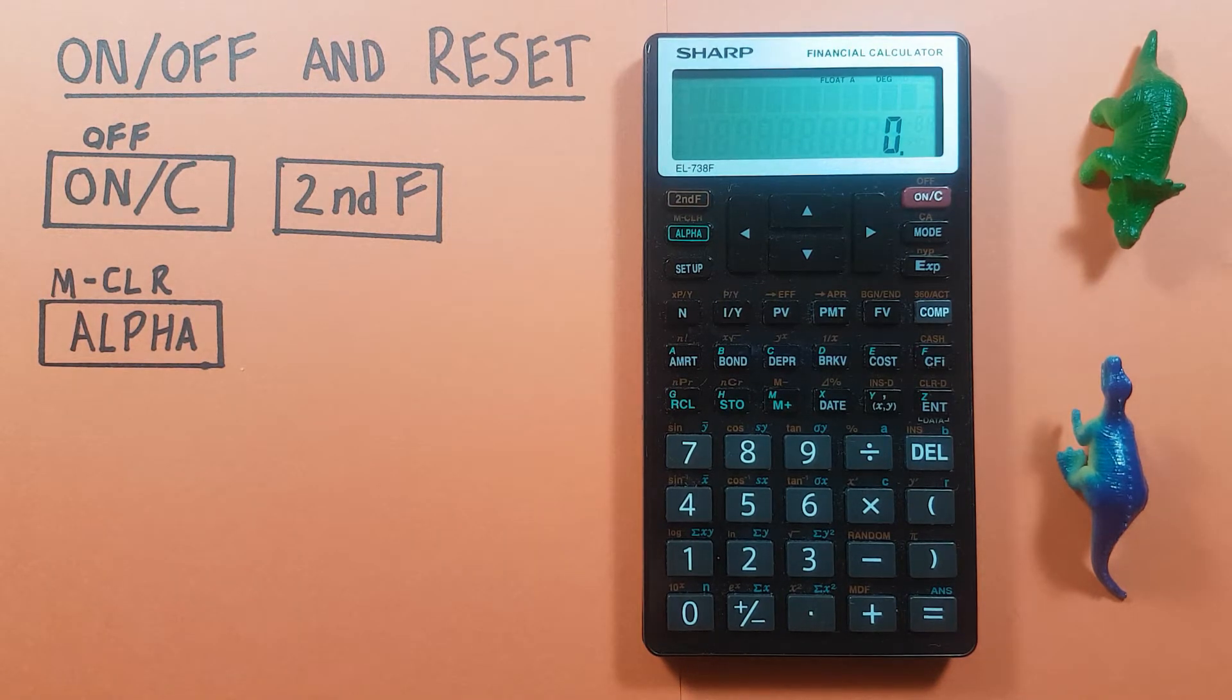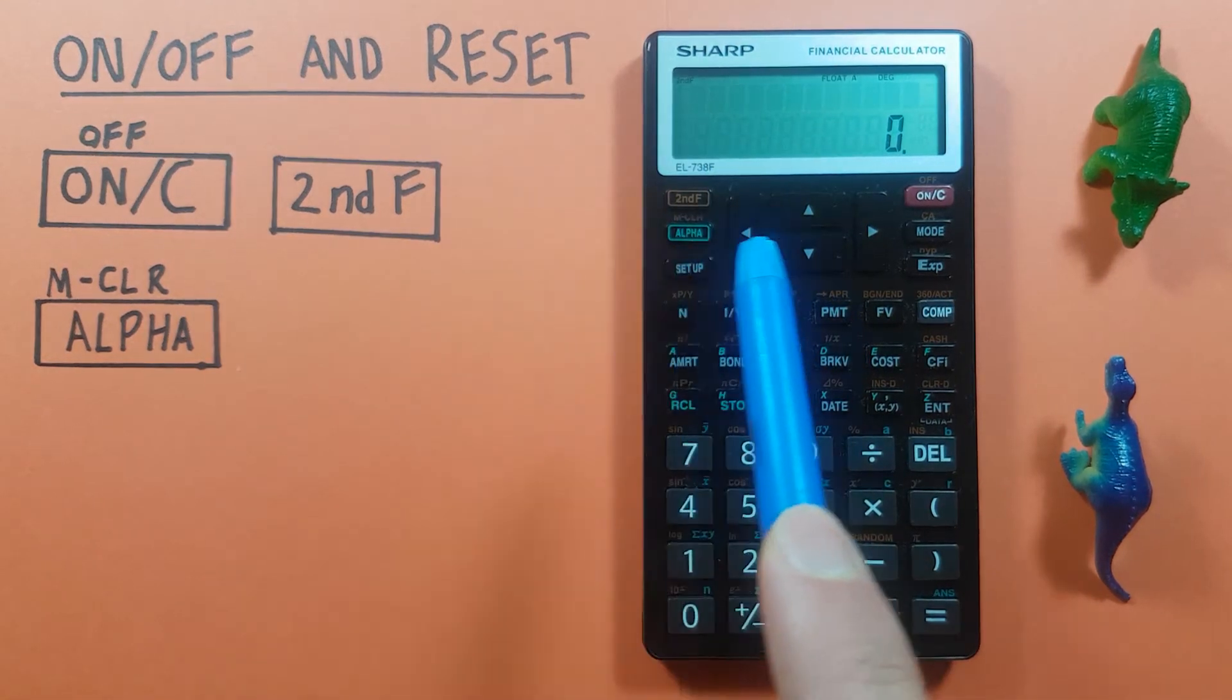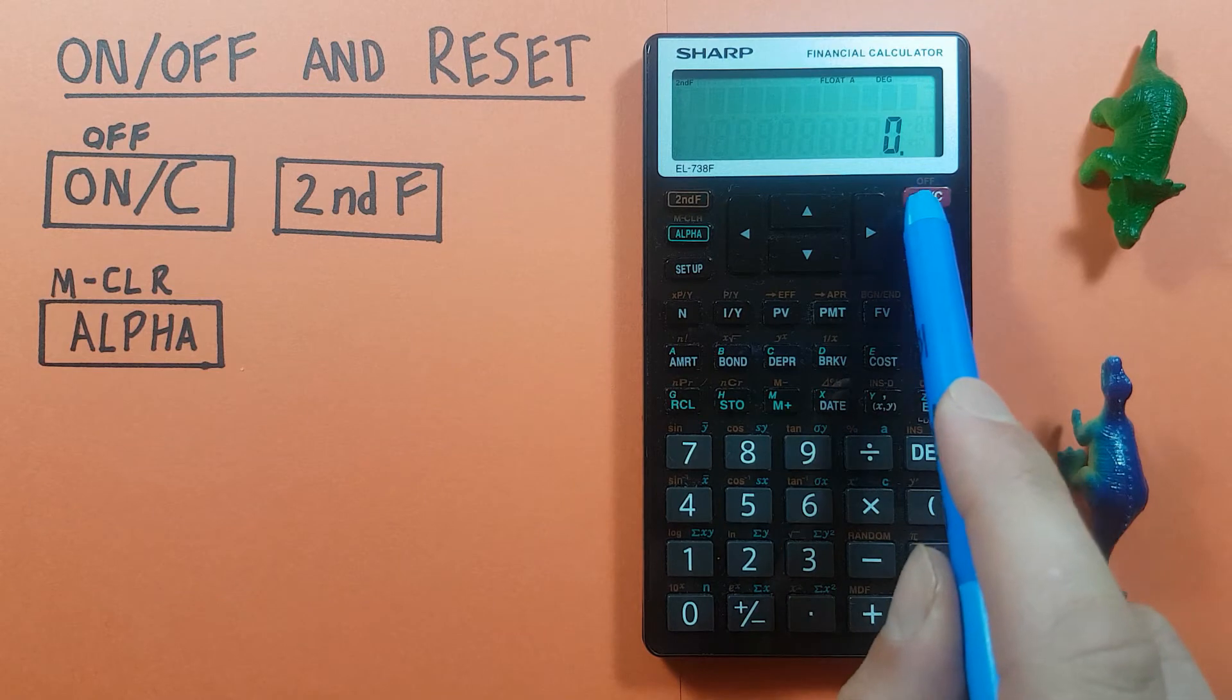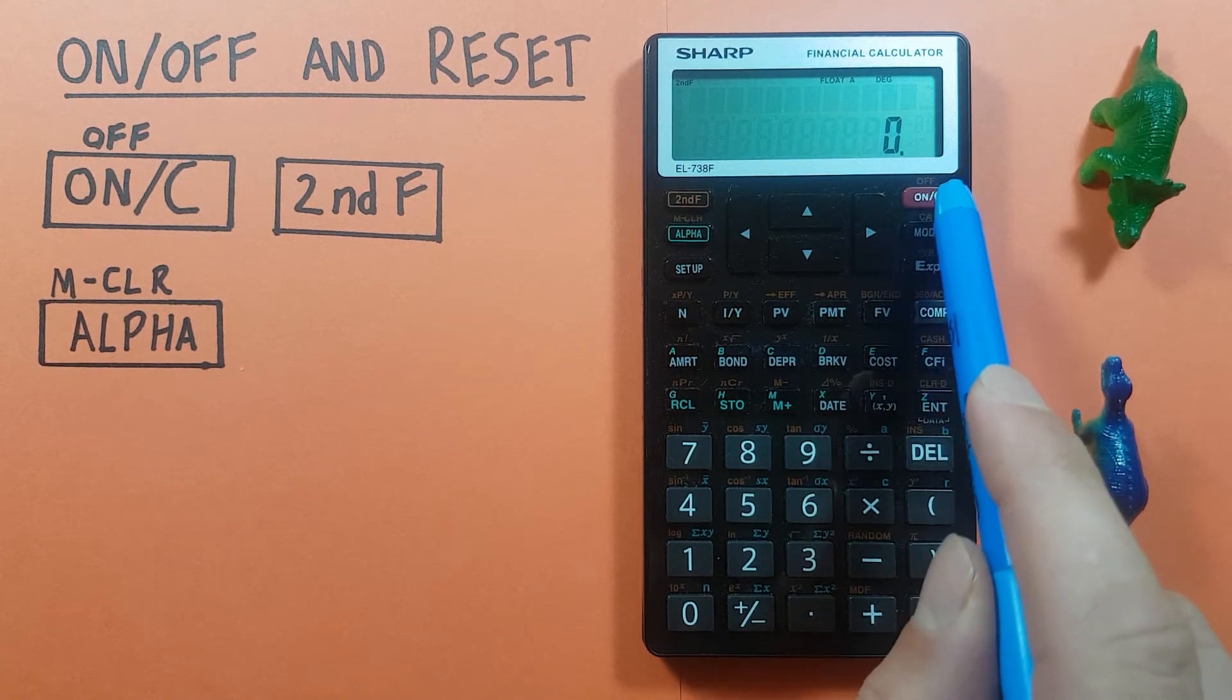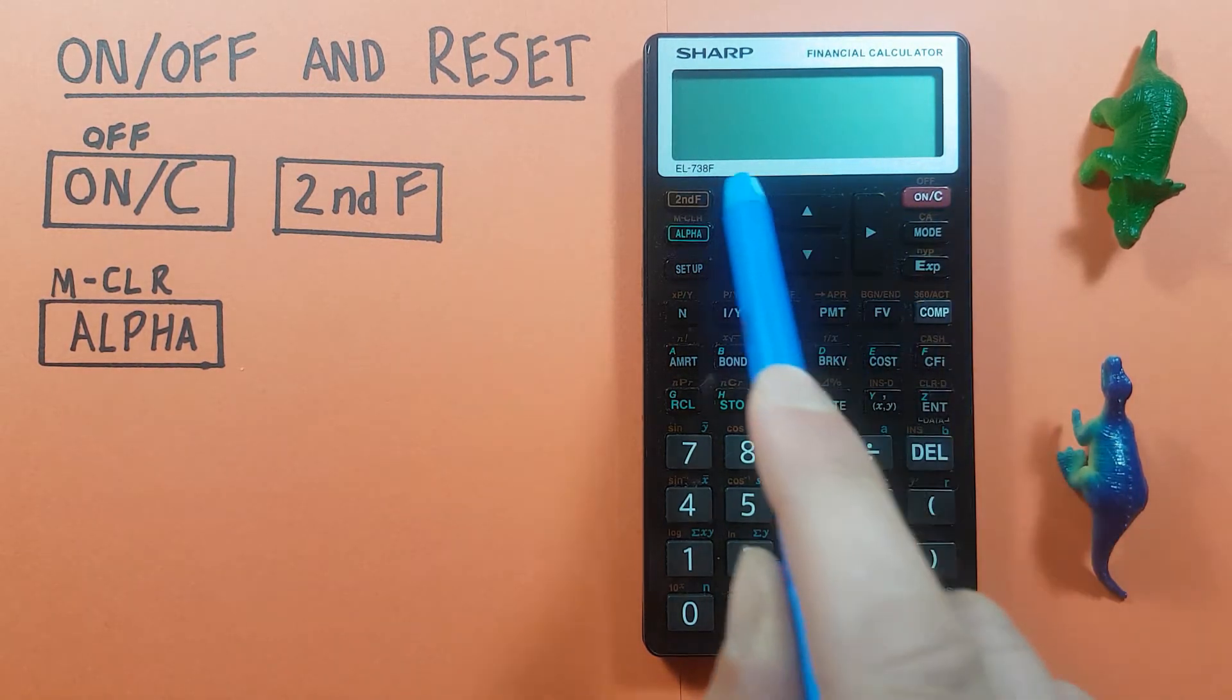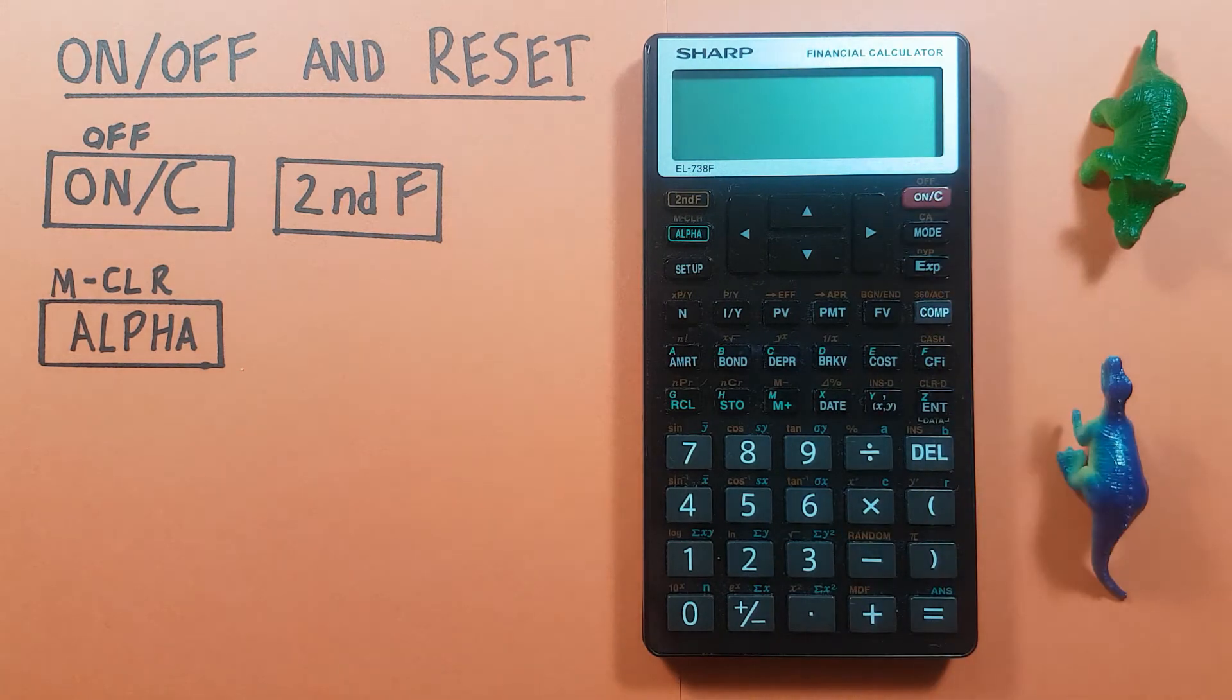When we're done working with our calculator, it's a good idea to turn it off to save your battery. To do that, you press the second function key and then the on key again, because the second function of this key is the off function. You press it, and you'll see your screen has completely gone off, and it's maintaining that battery.